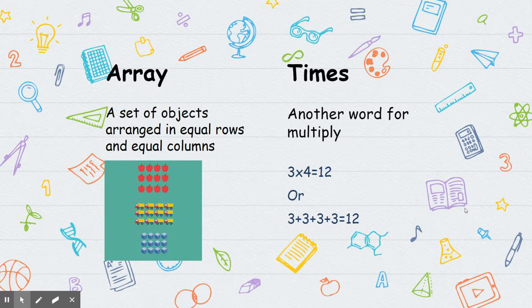Times. That's just another word for multiply. Some people might say times instead of multiply. So you can say 3 multiplied by 4 equals 12, or you could say 3 times 4 equals 12.